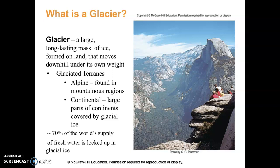So, glaciers. You guys should know what a glacier is — I'm not going to read over the definition, you guys can do that. I'd highly suggest that you take notes and write these things down. A couple of things to note: different types of terrains. Alpine glaciers are up in the mountains, and continental glaciers cover very large areas — entire continents. Think of the Ice Ages. About 70% of the world's supply of fresh water is locked up in glacial ice.